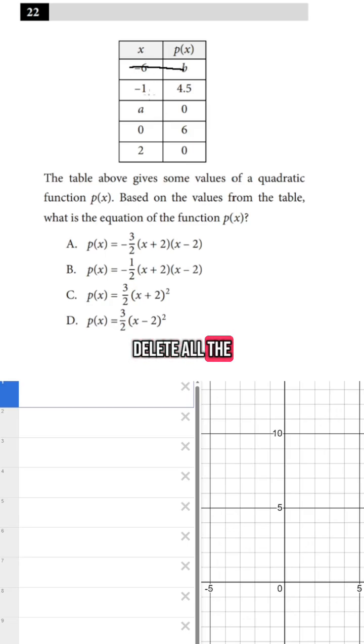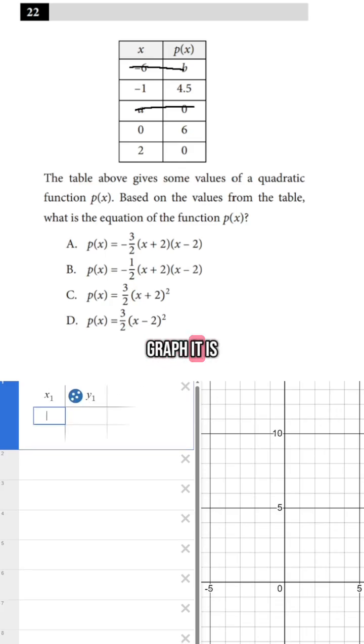If we delete all the points that give us constants because we don't have to deal with those, we still have three points. And if we have three points on a graph, and we know what type of graph it is, we know that it's going to be quadratic, we can just put this into a table.